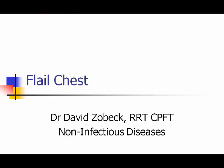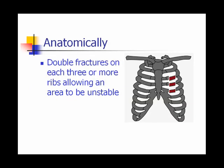We're going to look at flail chest. This is a traumatic injury to the lungs, and the effect it has on ventilation is very serious. The primary problem with flail chest is that you have two fractures on a rib, or three or more ribs. That leads to an area of the chest that is unstable — it just moves around when the patient breathes.